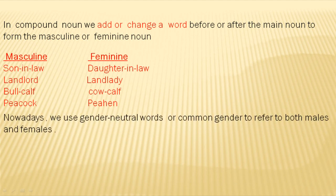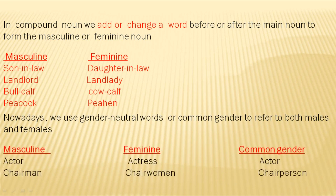Nowadays we use gender neutral words or common gender to refer to both males and females. For example, actor is masculine and actress is feminine, but we mostly use actor as a common gender. Chairman becomes chairwoman, but in place of these words we use the common gender: chairperson.